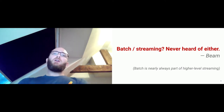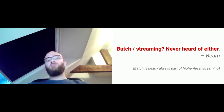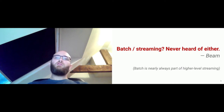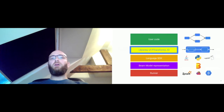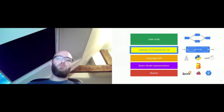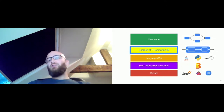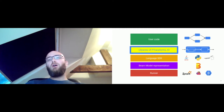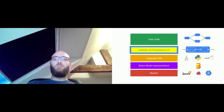That's the Beam stack. On top, you have the user code — the pipeline written using libraries of transforms and IOs provided by the language SDKs. There are several language SDKs: one for Java, one for Python, one for Go, and they all expose Beam model concepts like windowing. The bottom layer is the translation layer between a pipeline written with the Beam API and a native pipeline for Spark, Flink, or Dataflow.